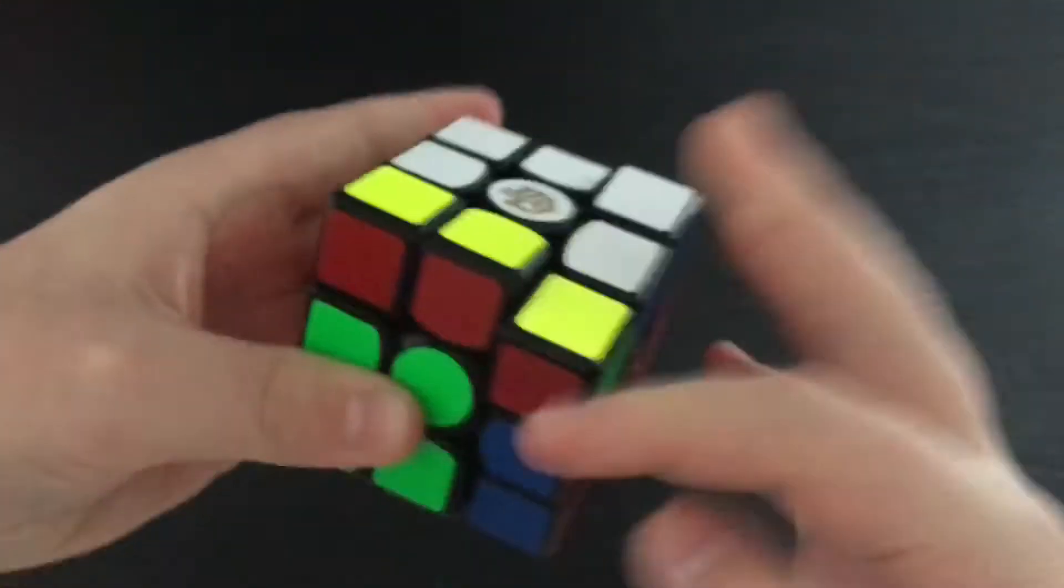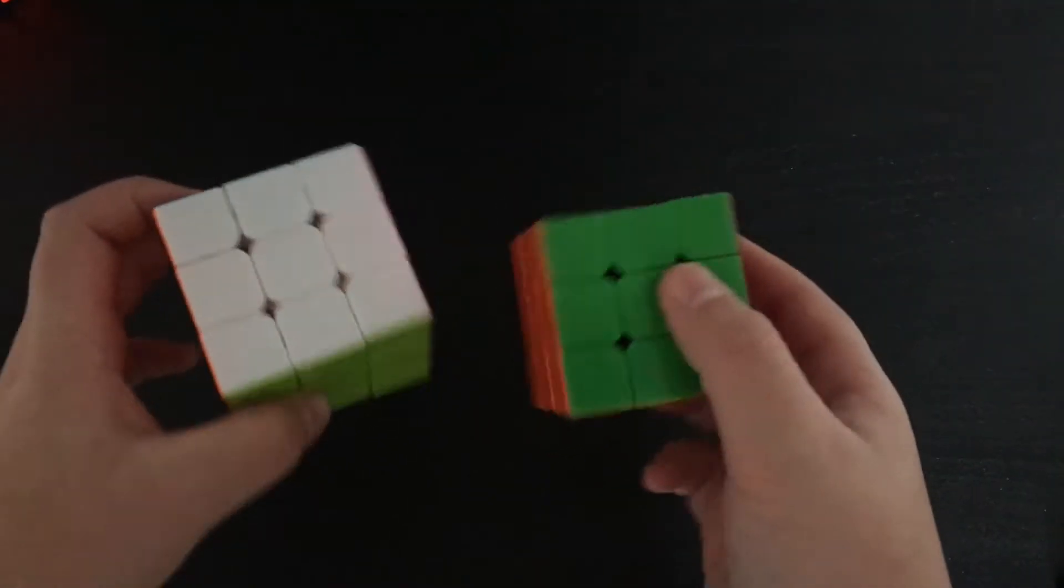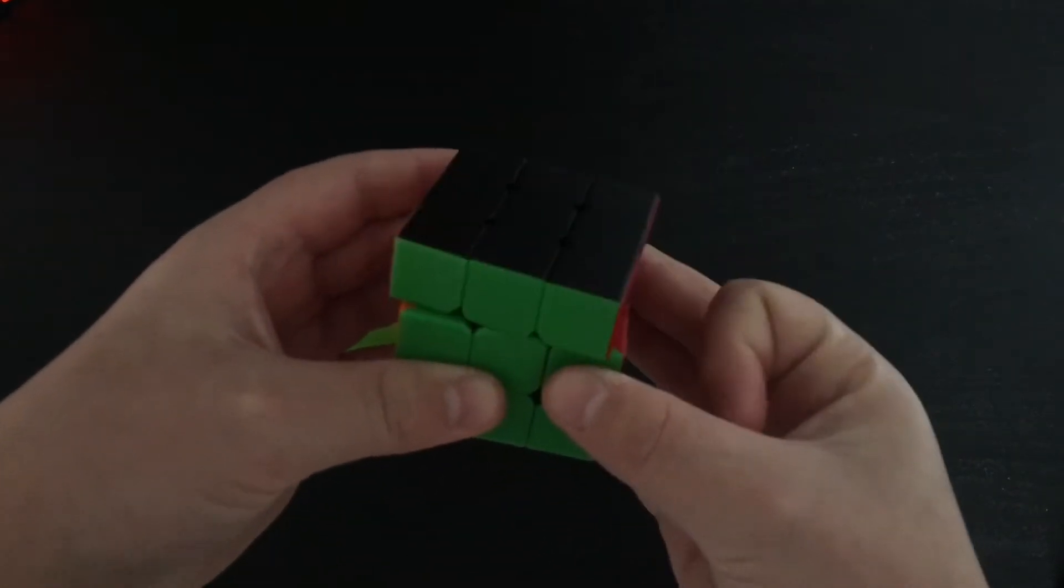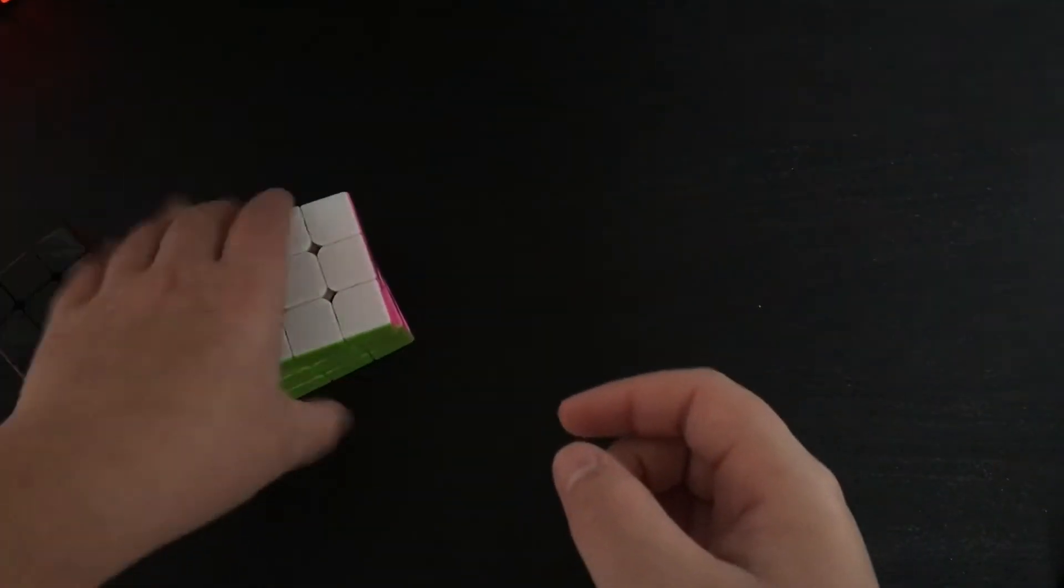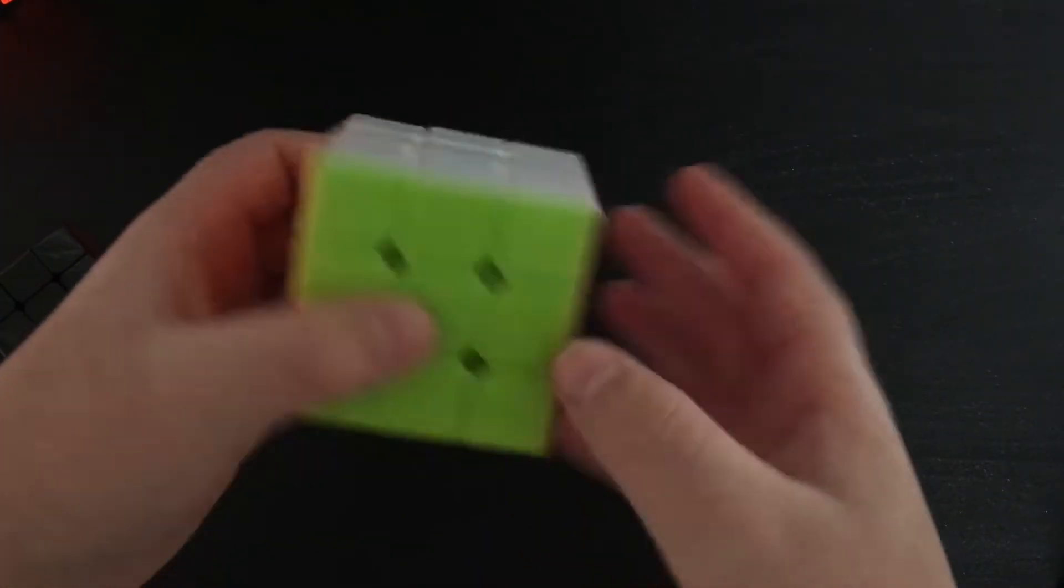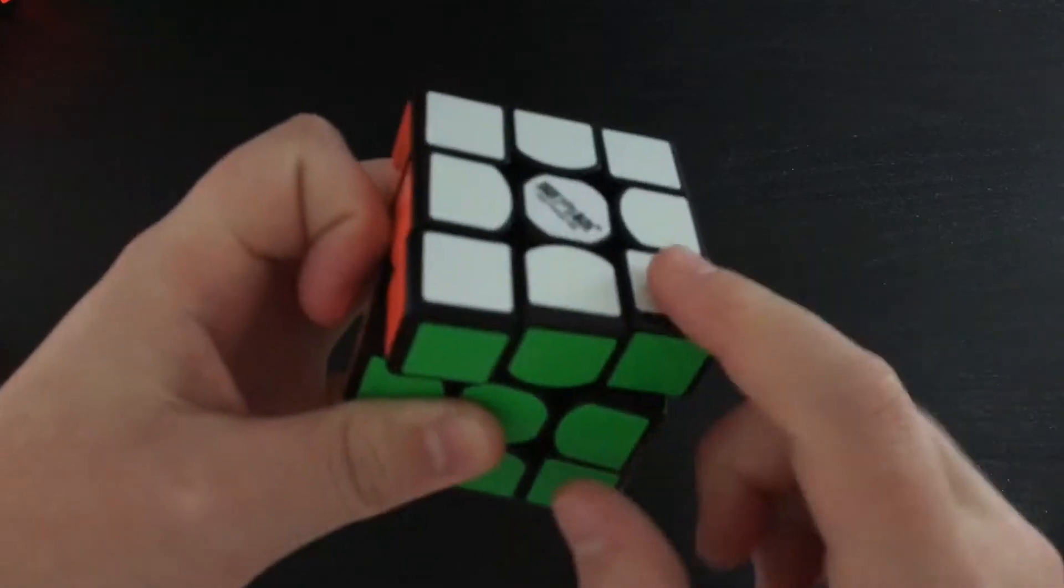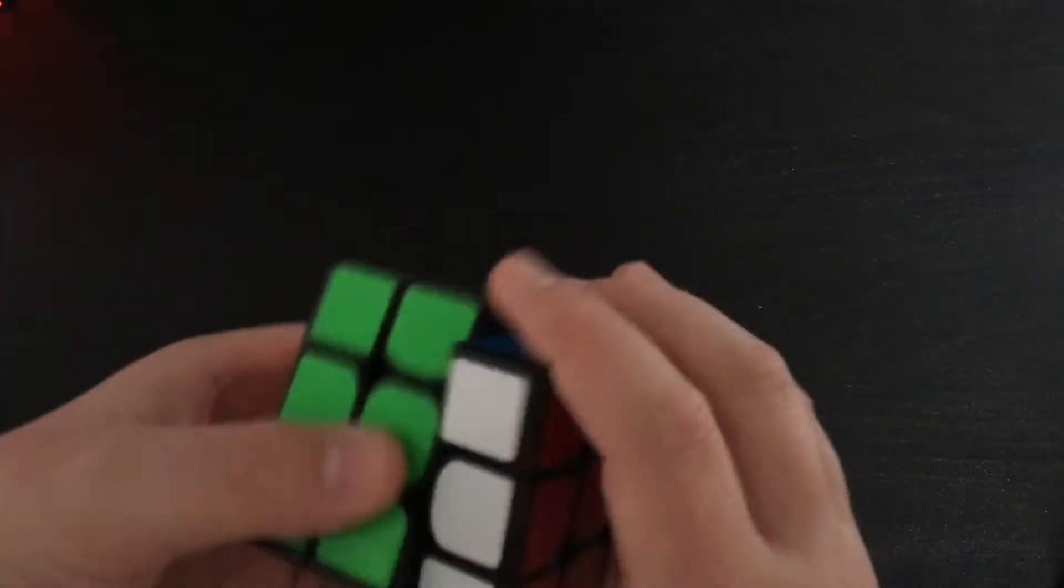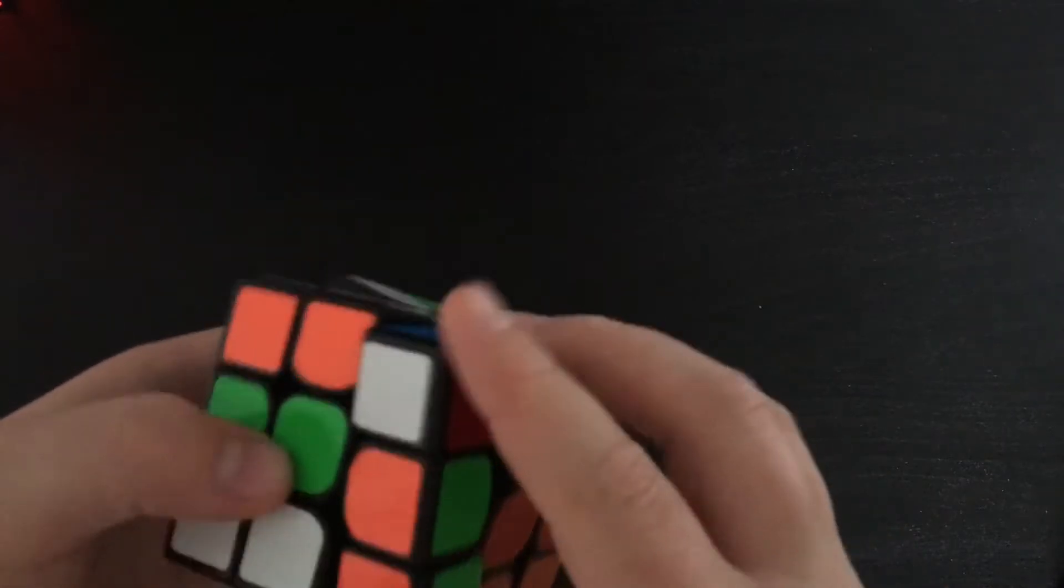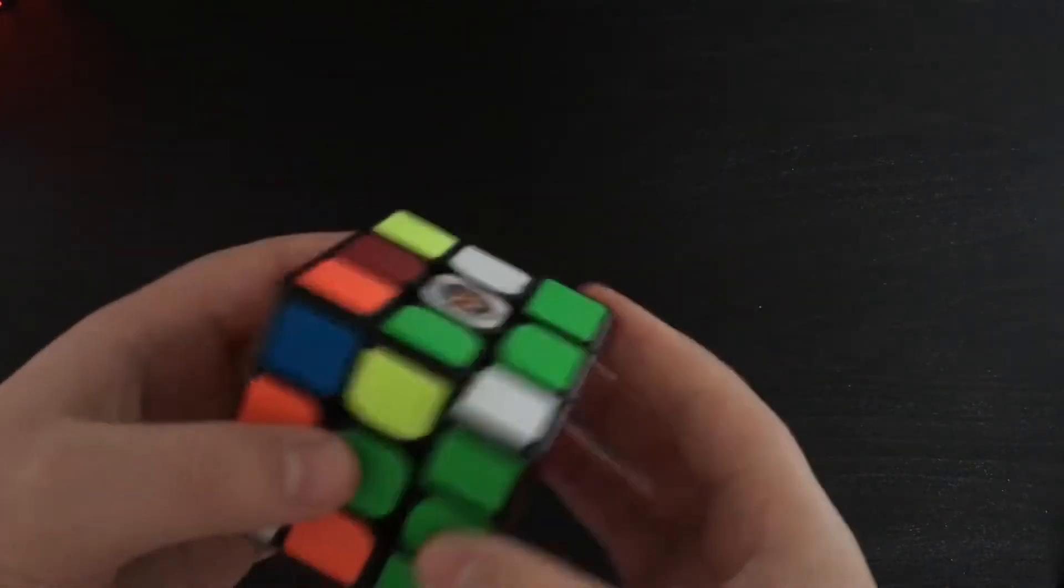These are my two stickerless 3x3s. I have a 50mm Zanchi in stickerless black and I have a 57mm Fonction Li Shuang. This is the Thunderpot V2, not a terrible 3x3, but it does have some catching issues. The Shangxiao Fangyung, also not a bad 3x3.